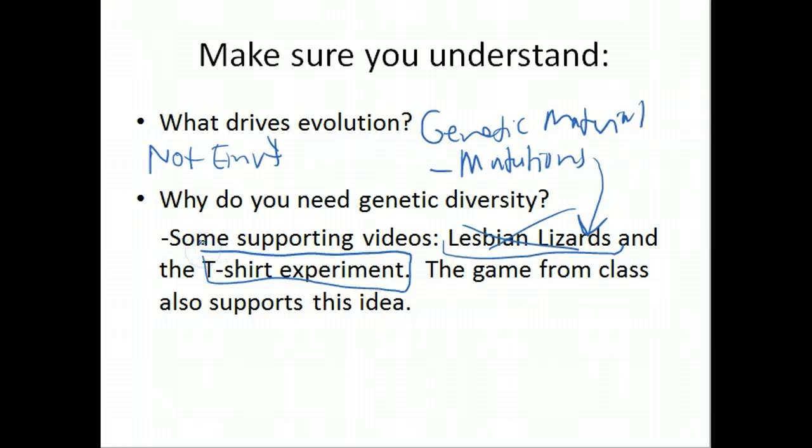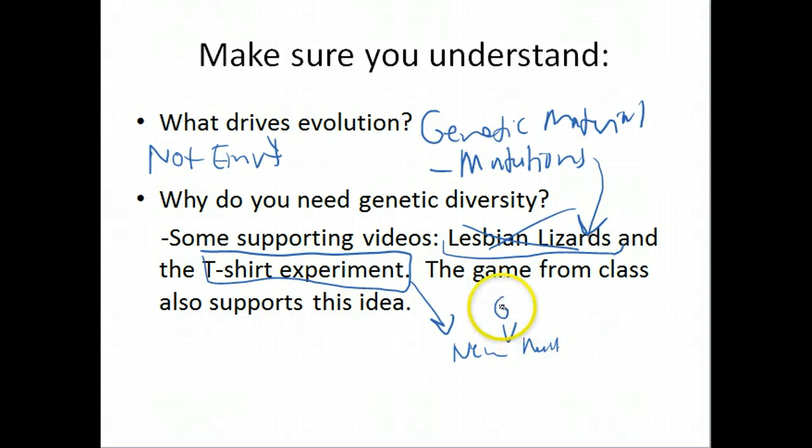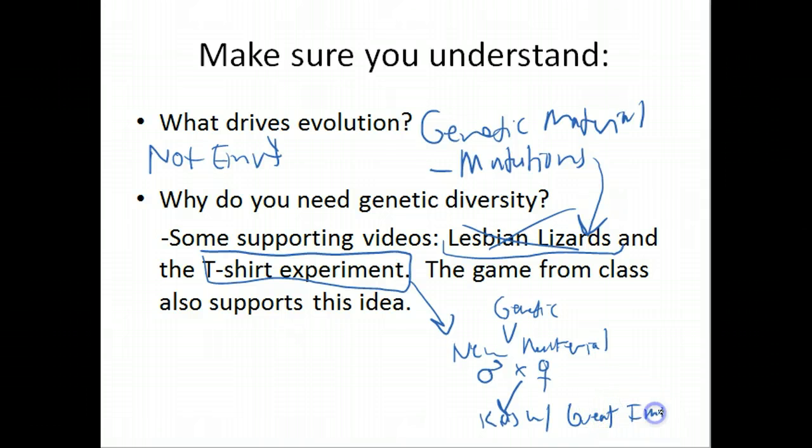We also saw in the t-shirt example, the t-shirt example where the guys wore the shirts for a week and the women were smelling the shirts, that we have an unconscious selection for new material, new genetic material. If you remember, the women in that experiment were unconsciously selecting mates that had immune systems that were different to them. So if you take a male and a female with a certain immune system, basically what you'll have are kids with great immune systems. Obviously that goes a long way to keeping the organism alive and keeping the genes out there. So this is an example of a subconscious liking for a mate that has genes that are complementary to yours or genes that are new and create novel offspring.